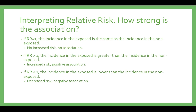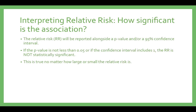If the relative risk is less than 1, the incidence in the exposed is less than the incidence in the non-exposed. There is a negative association or protective effect of being exposed to the stimulus. Remember, the further the relative risk is from 1, the stronger the association. When you interpret a relative risk, remember to take into account whether the association is significant.